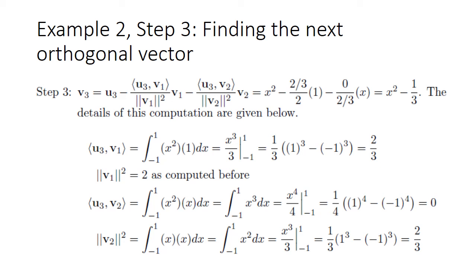The third step generates V3, the last vector in the orthogonal basis, as U3 minus the orthogonal projection of U3 onto V1, minus the orthogonal projection of U3 onto V2. The inner product of U3 and V1, computed through the integral, gives two-thirds, and the norm squared of V1 is 2. The inner product of U3 and V2 through the integral gives zero, and the norm squared of V2 is two-thirds. The result is V3 = x² − 1/3.